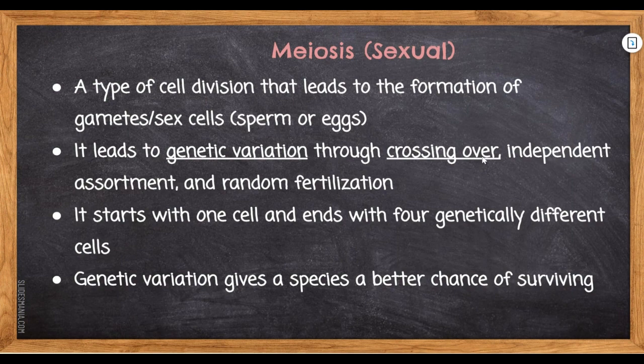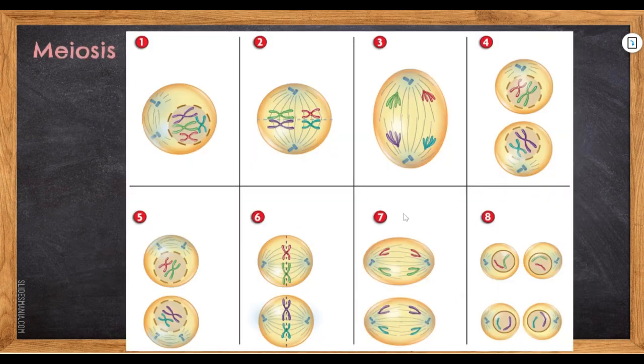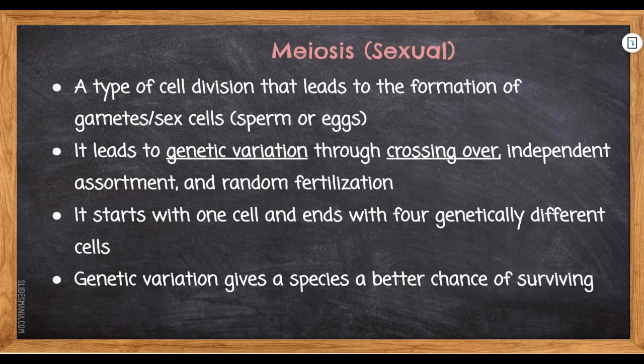Genetic variation also happens through independent assortment — no matter how chromosomes line up on one side, the chromosomes on the other side can line up however they want. It's kind of like flipping a coin for each set of homologous chromosomes. Random fertilization also contributes: a sperm could reach any egg randomly and fertilize it, leading to variation. Genetic variation through crossing over, independent assortment, and random fertilization is very important.